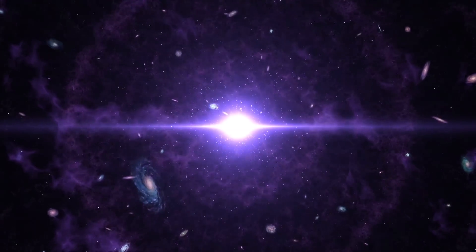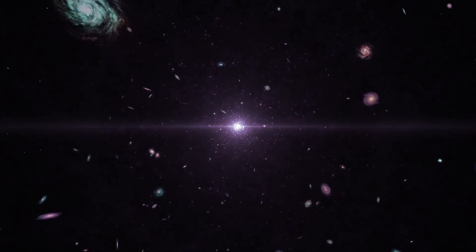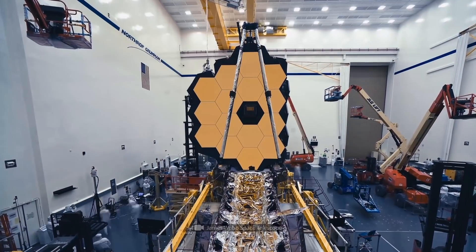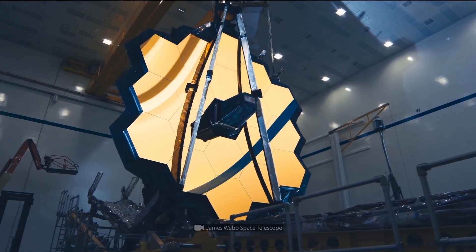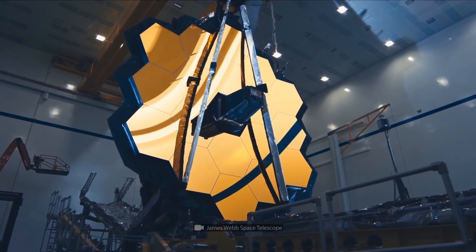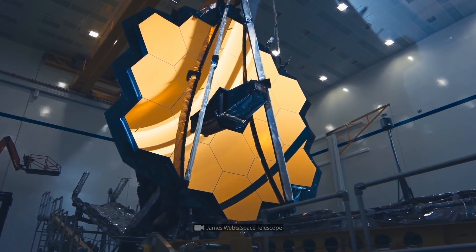Which will help us search for traces of the first light in the universe and to explore exoplanets. No telescope has ever had such range and such available tools. And the Webb is so sensitive that it can detect the heat signature of a bumblebee on the Earth from the Moon.